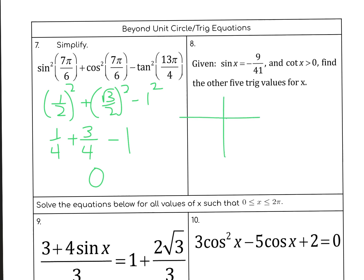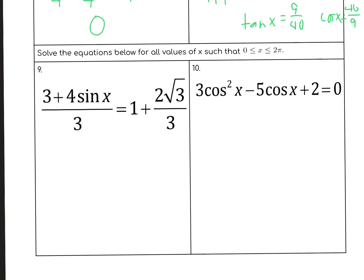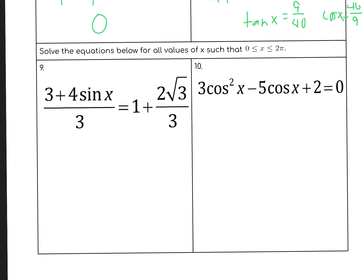Given that sine is negative 9/41 and cotangent is positive, that means we're in quadrant 3. So with negative 9 over 41, if you do the Pythagorean theorem that will give you 40. So I have to find the other values: cosecant is easy — negative 41/9, just flip it. Cosine is going to be 40/41 but negative, which means secant is negative 41/40, tangent is going to be 9/40, and cotangent is going to be 40/9.